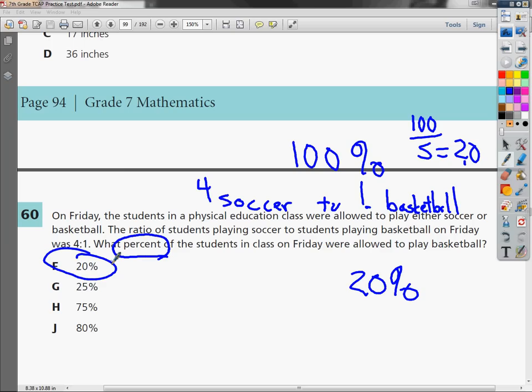The other ones don't really make any sense. 75 and 80, if you look and make sure that you pay attention to the fact that soccer comes first and then basketball, soccer is 4, that's way more. There's no way that 75% or 80% could be the answer.